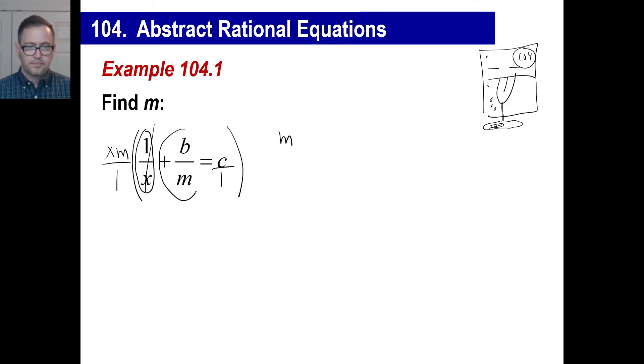This one, what cancels this time when you multiply the common denominator by b over m? The m's, right? Okay, the m's cancel. You just have xb, right? So it's m plus xb equals.